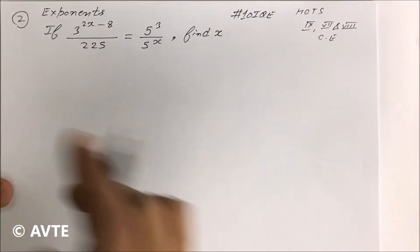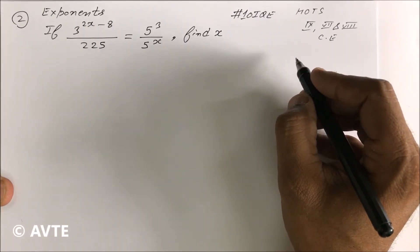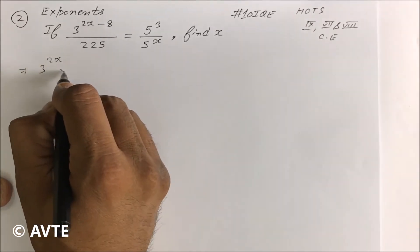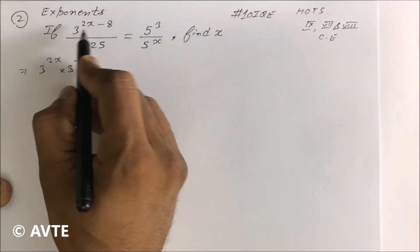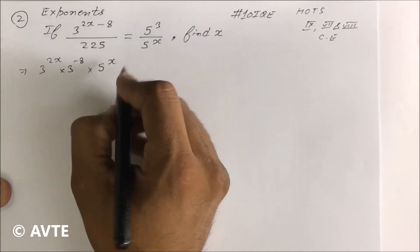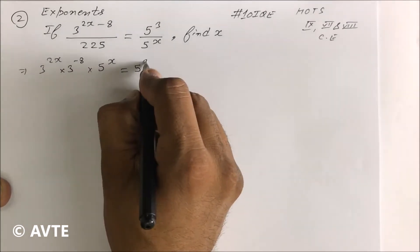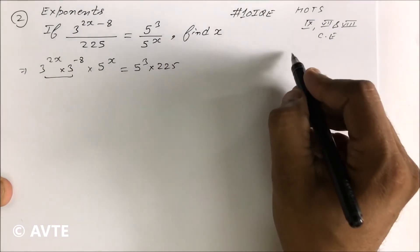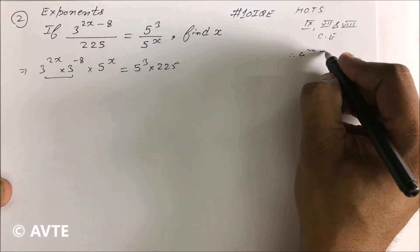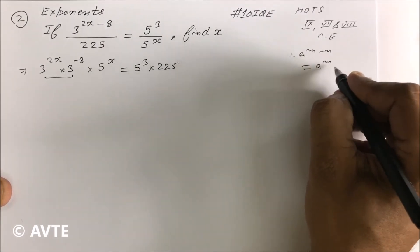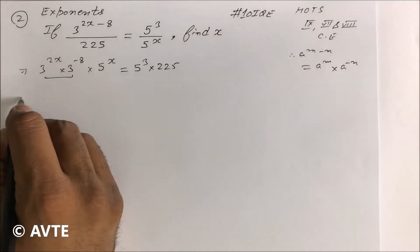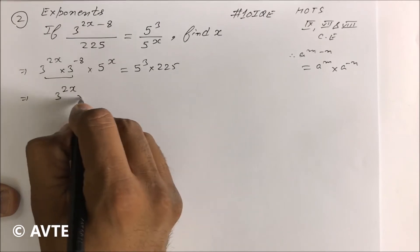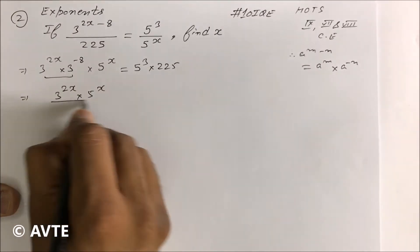We apply the formula and can also do cross multiplication. So we get: 3 raised to power 2x, into 3 raised to power minus 8, into 5 raised to power x is equal to 5 cube into 225. We apply the formula a raised to power (m − n) equals a raised to power m into a raised to power minus n. Taking the negative sign to the denominator, we have 3 raised to power 2x into 5 raised to power x in the numerator, and 3 raised to power 8 in the denominator.